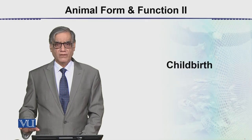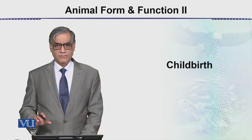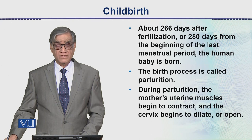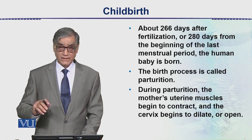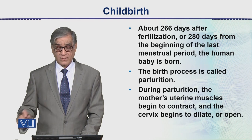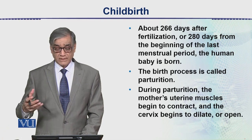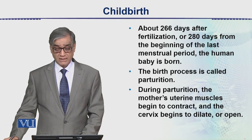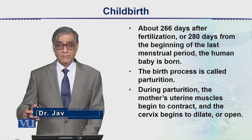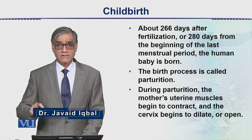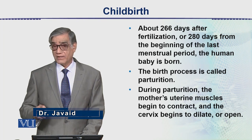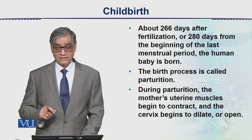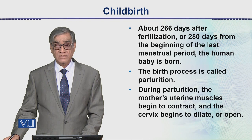In this module we will be discussing the process of childbirth. About 266 days after fertilization, the human baby is born. If we count from the beginning of the last menstrual period, that will be 280 days. But if we talk about fertilization, that will be 266 days.